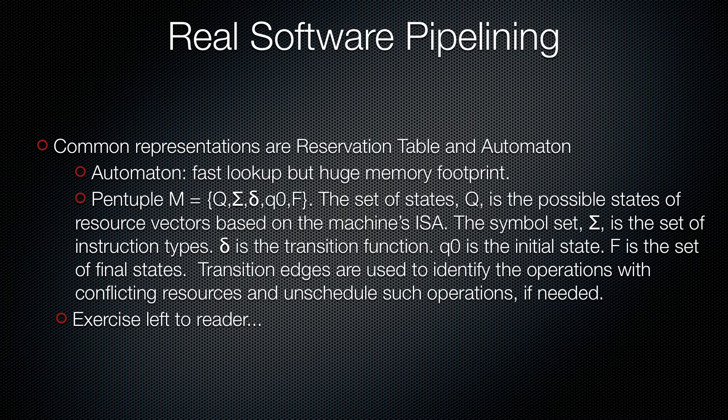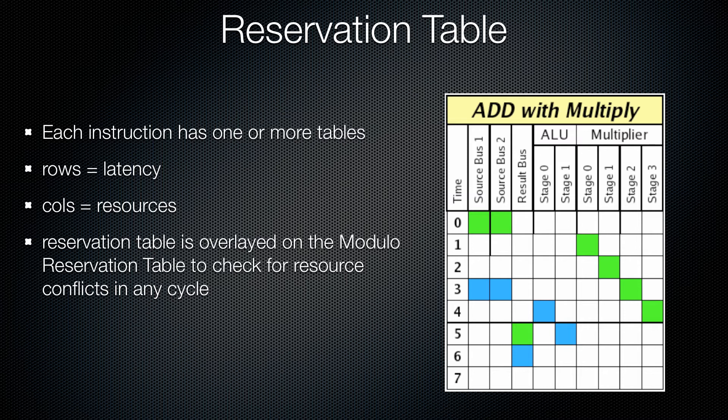I'm not going to talk about automatons, but they're really, really cool. It's one representation when implementing this family of algorithms — a state vector — and it's kind of interesting. Exercise left to the reader because I don't want to spend too much time on it. I will talk about reservation tables a bit. The reservation table is what you see on the right. You have a modulo reservation table where you schedule all your instructions, and you take one of these diagrams, overlay it on your schedule, and check to see if any boxes conflict with ones already there. If they conflict, you have a resource conflict and can't put that instruction there — you have to try somewhere else. It's a cool way to check for resource conflicts and verify that something can be scheduled at a particular place.